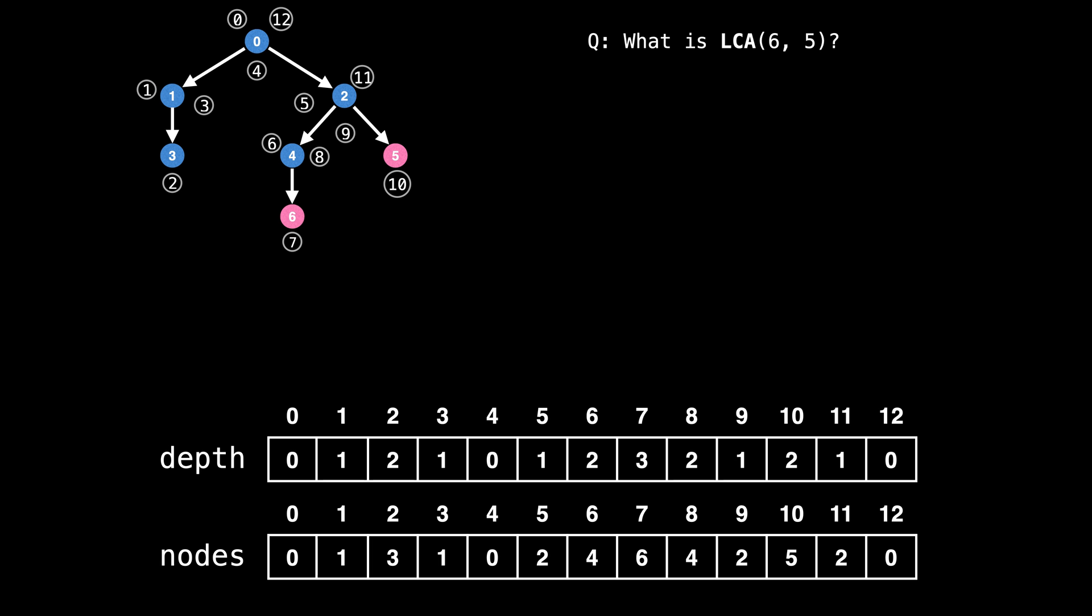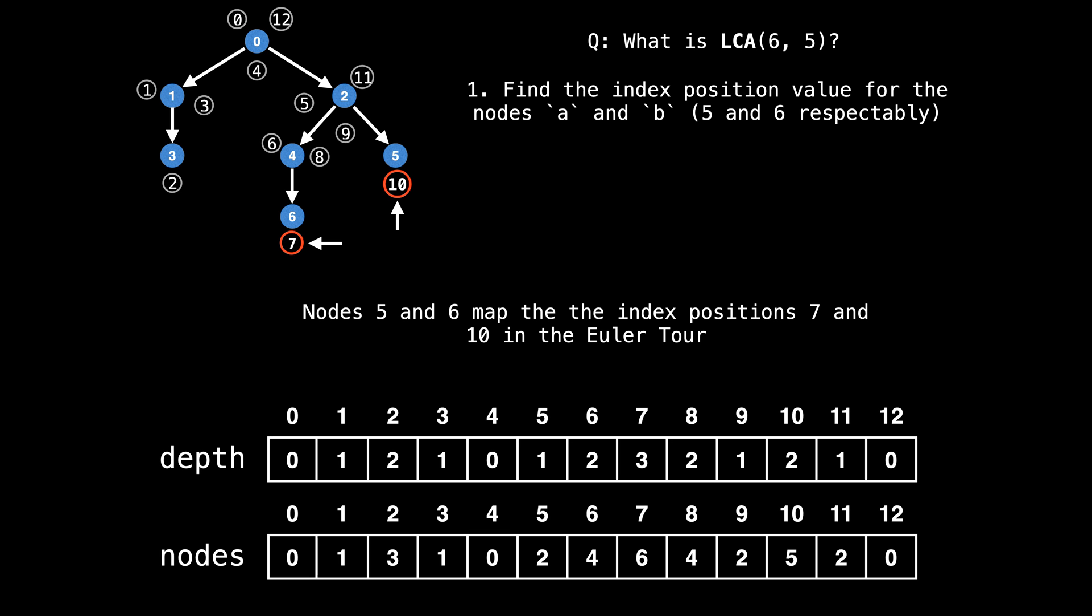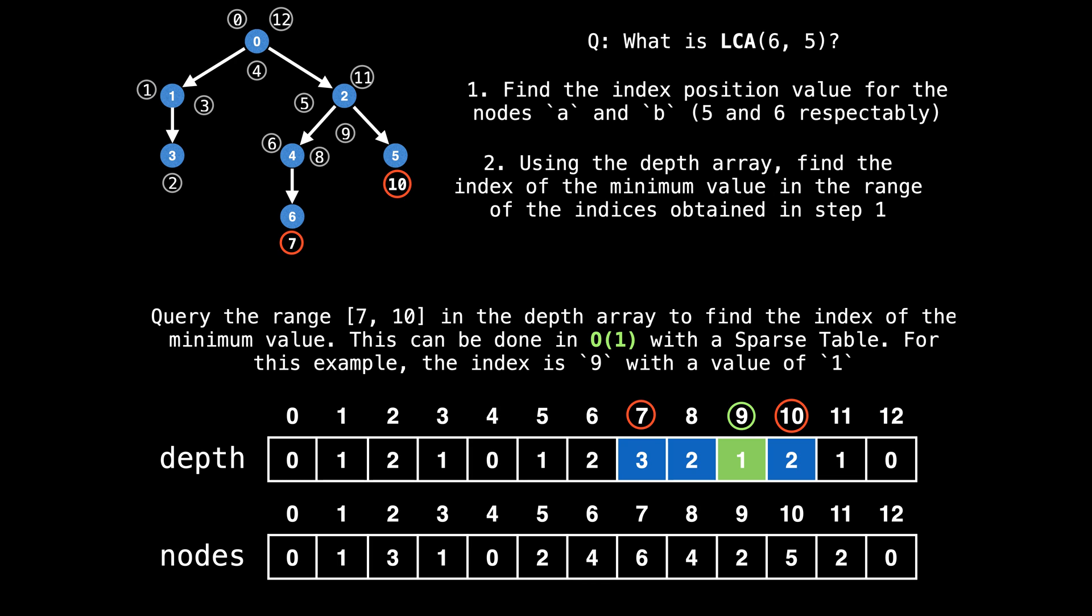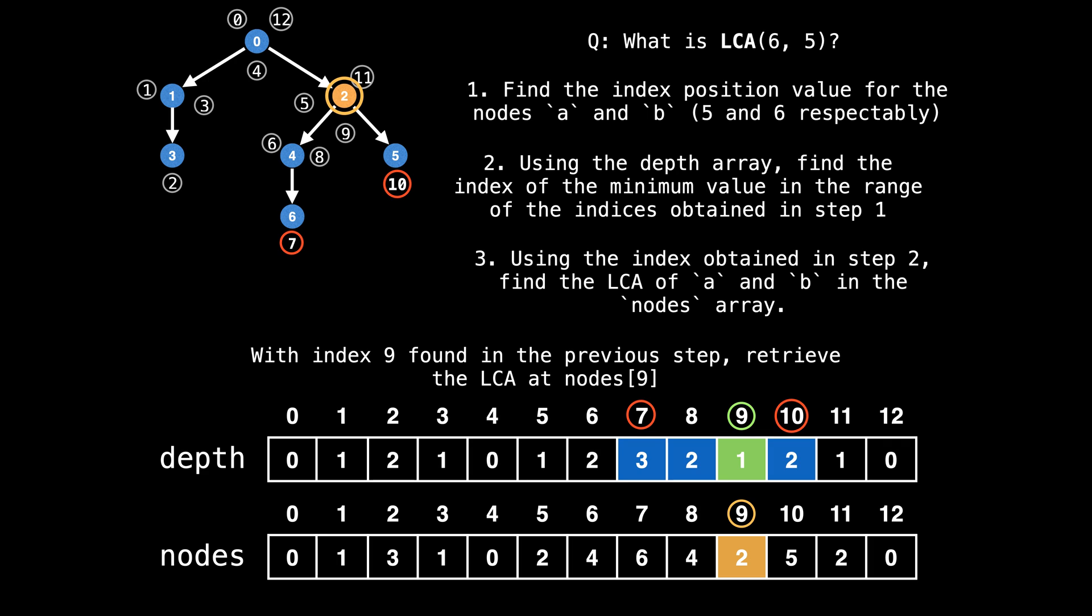Now that we've built the Euler tour and tracked some additional information about it, how can we use that information to find the lowest common ancestor of two nodes? In this next example, I'm going to show you the step by step process on how to do that. Let's use nodes five and six highlighted in pink as an example. The first step is to find the index position of our two nodes in the Eulerian tour. In this example, nodes five and six map to the index positions seven and 10 in the tour. Then the second step is to find the index of the minimum value in the range obtained in step one. So if we query the index of the minimum element in the range seven to 10 inclusive, then we get the index nine circled in green with a value of one. Now with index nine found in the previous step, we can retrieve the lowest common ancestor by looking at index nine in the nodes array.